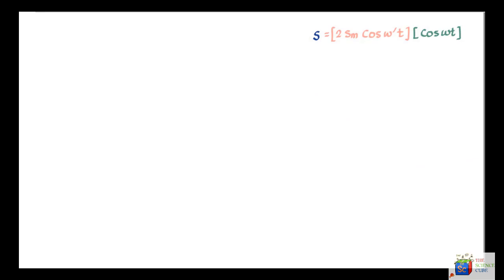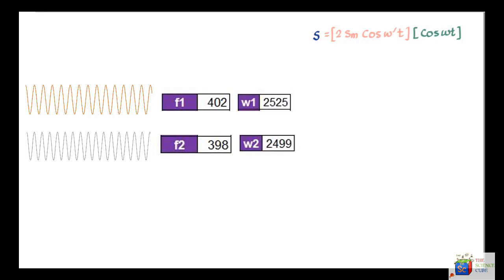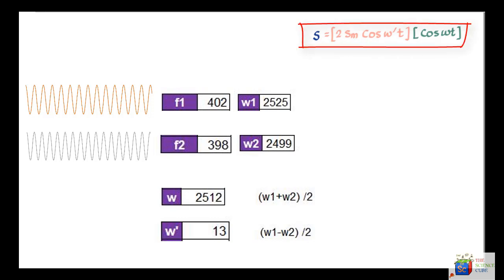Let us put some real values in this equation and say that the two waves we are dealing with have a frequency of 402 hertz and 398 hertz respectively. Then the corresponding ω1 and ω2 would be this, which of course is nothing but 2πf. Once we have ω1 and ω2, we get ω and ω', and therefore your final equation of the resultant wave in the form we have derived earlier would be this, where we assume Sm is 1.5.